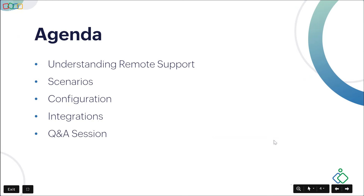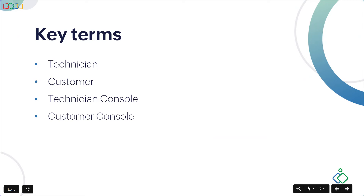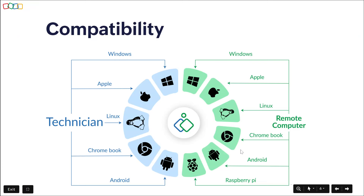Let's go over the key terms I'll be using in today's training. A technician is the person who initiates an on-demand remote support session. A customer is the person whose screen will be accessed — the technician will troubleshoot issues on their screen. The technician console is the set of options provided to the technician during a session (the blue bar), and the customer console is the options provided to the customer during an ongoing session.